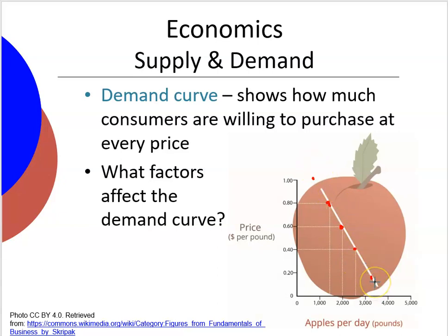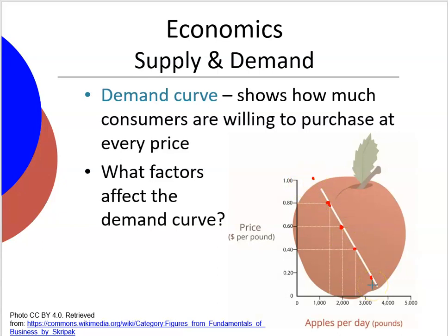This shows how many apples people will buy. It works intuitively: the lower the price, the more apples people will buy; as the price goes up, people will buy fewer apples. The curve is downward sloping — we call this the demand curve. It tells you how much people are willing to purchase at every price. For example, if the price is 60 cents, people will buy 2,000 pounds of apples.